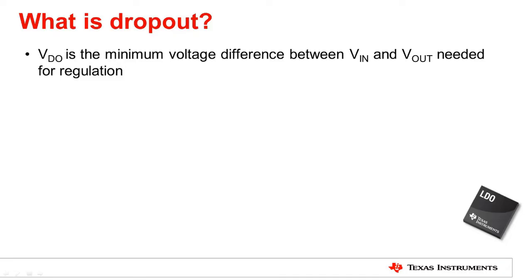Voltage dropout, usually represented as VDO, refers to the minimum voltage differential needed between the voltage input and the nominal voltage output to maintain regulation. Therefore, in order to maintain a desired output, we must ensure that the input voltage is at least the desired nominal output plus the minimum voltage dropout of the LDO, as can be seen in the first formula.